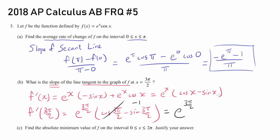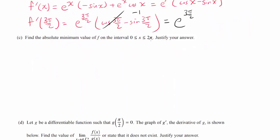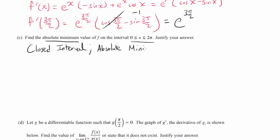So that's the answer to number 2. Let's go on to part C: find the absolute minimum value of f on the closed interval from 0 to 2 pi inclusive. We are going to use the Candidate's Test.